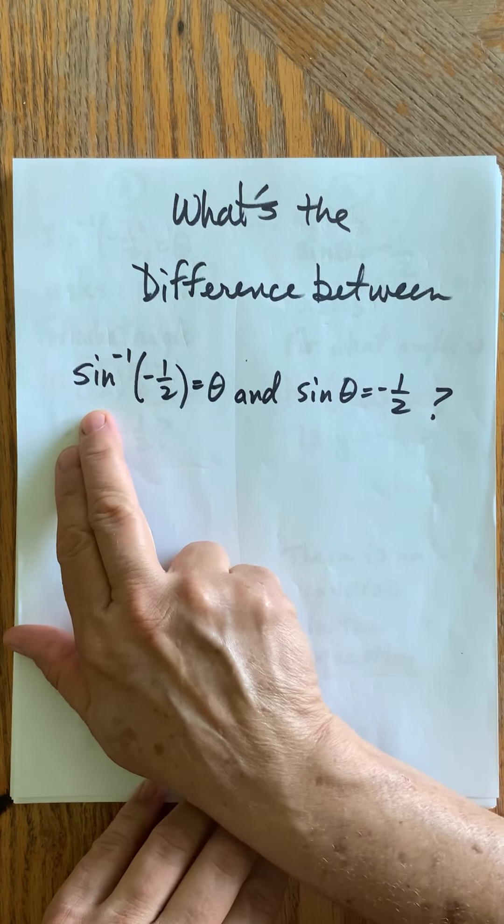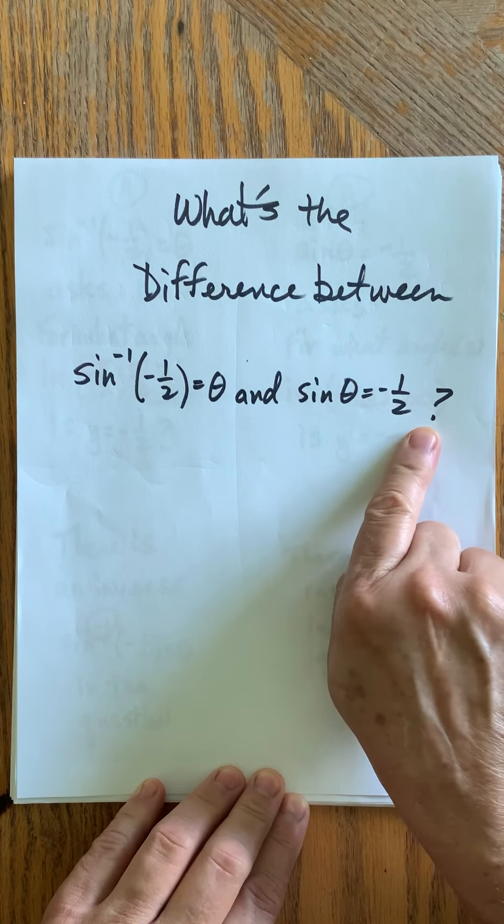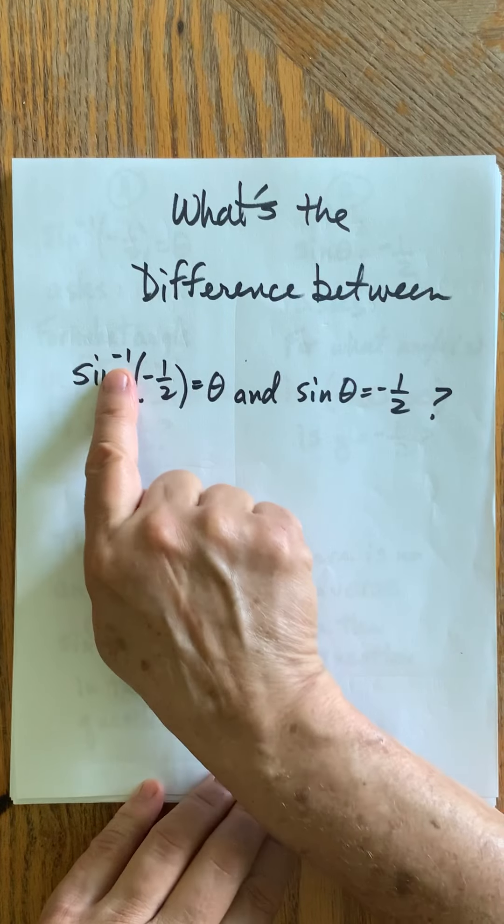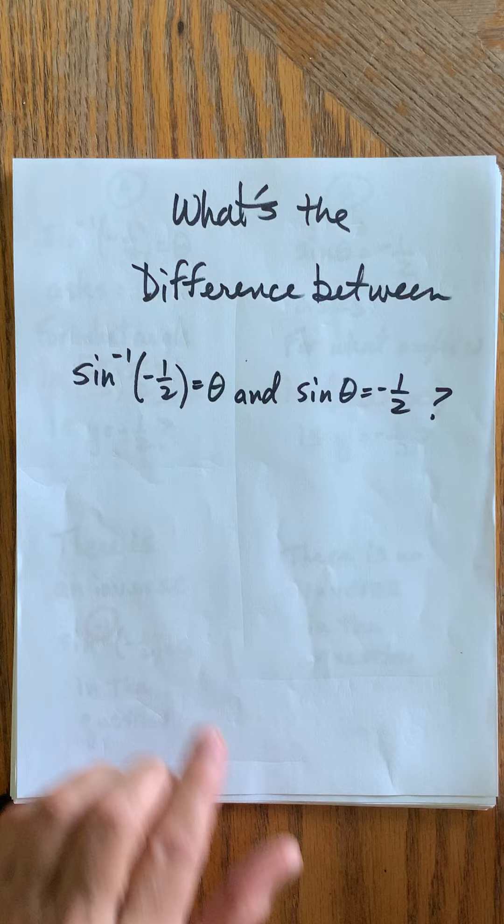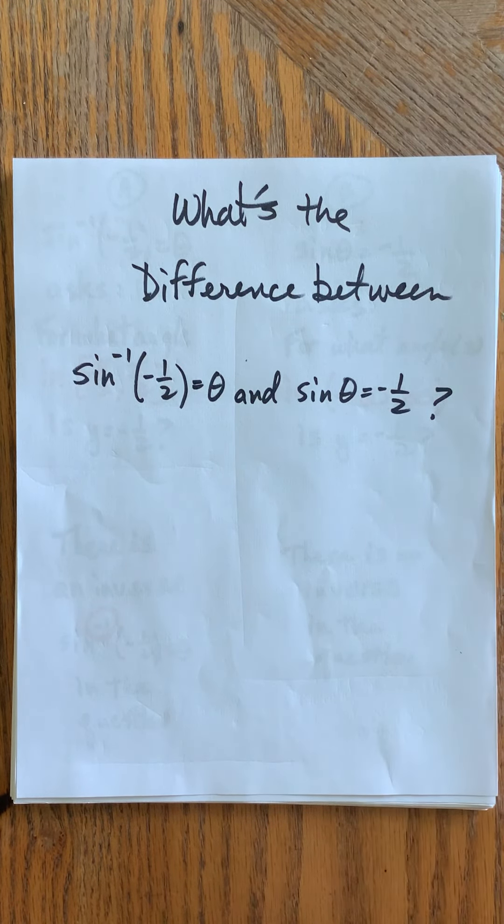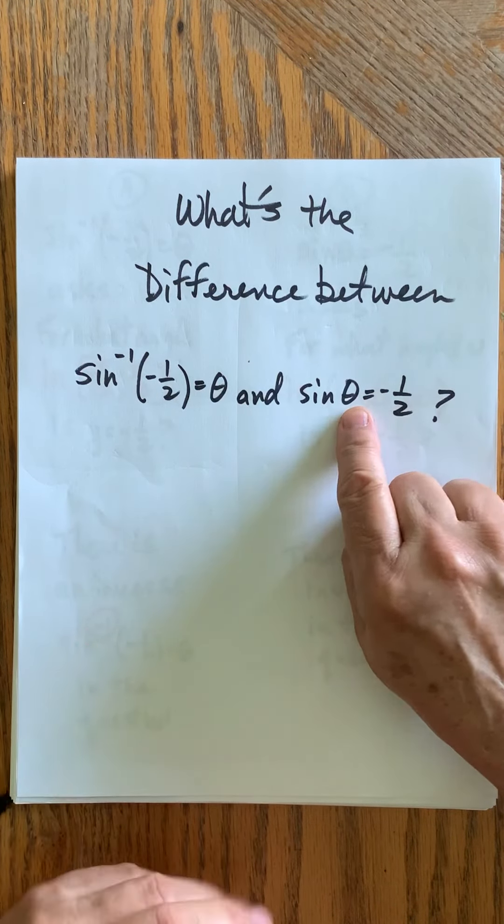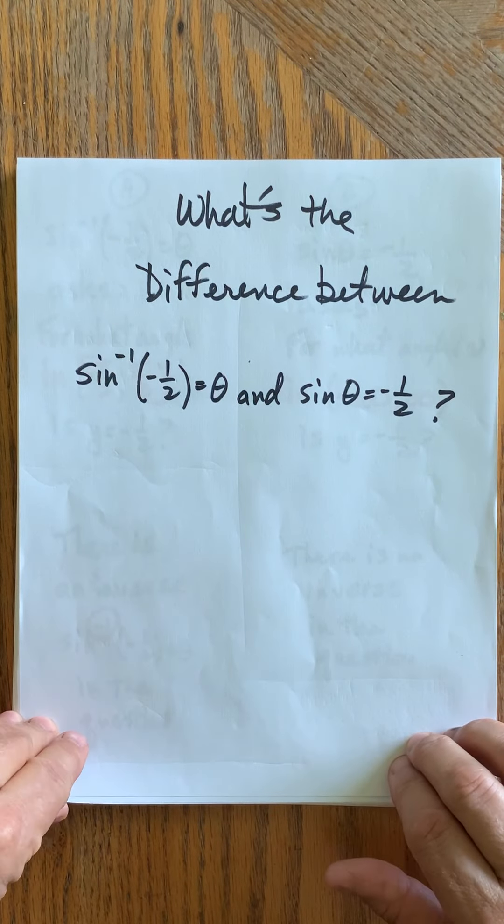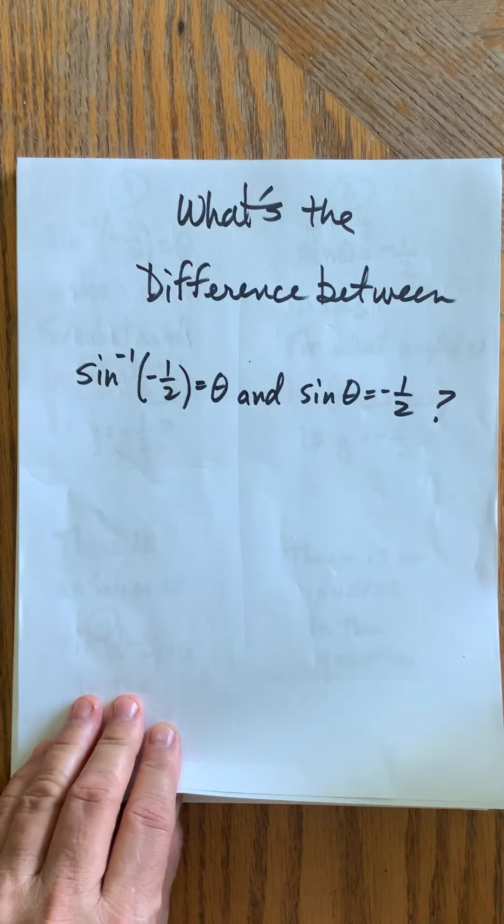Sometimes when you're solving equations you'll see sine of an angle equals negative a half. So you're solving an equation versus an inverse question which is sine inverse of negative a half equals what angle. Remember that for inverses, in comes a ratio, a number, and out comes an angle, versus for the regular function, in comes an angle, out comes a ratio. But they almost seem the same, however they're just slightly different.